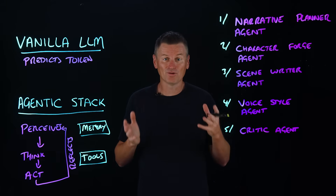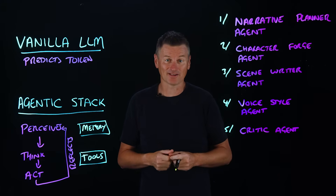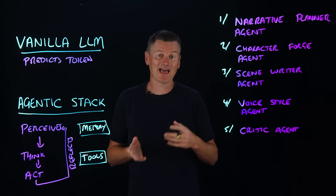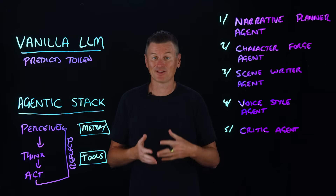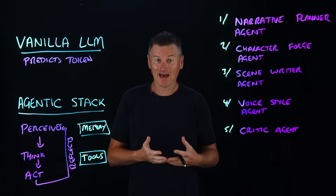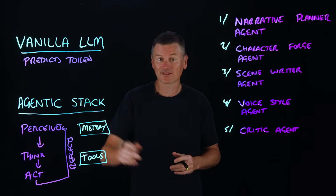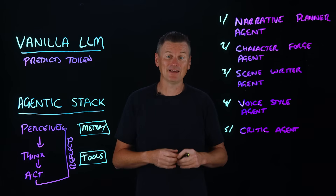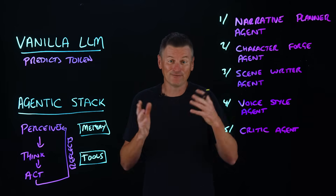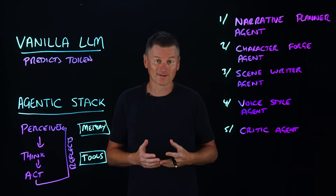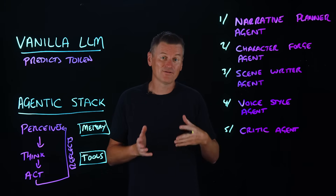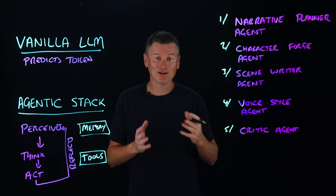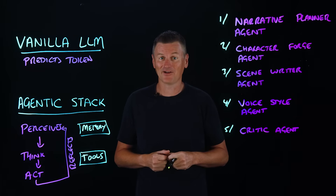This overcomes those shortfalls mentioned earlier. Context window overflow is no longer a problem because character and world facts live in external memory, and agents only retrieve the current scene they need. Style drift is avoided as the voice style agent enforces a reference corpus. And no self-critique is a thing of the past, because the critic agent iteratively checks goals and coherence.